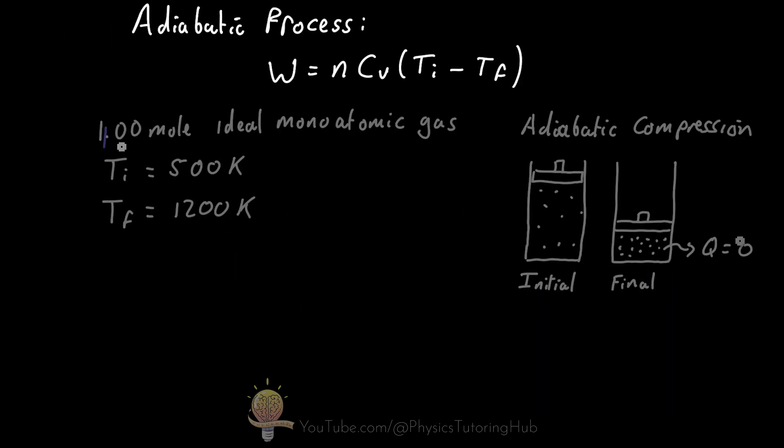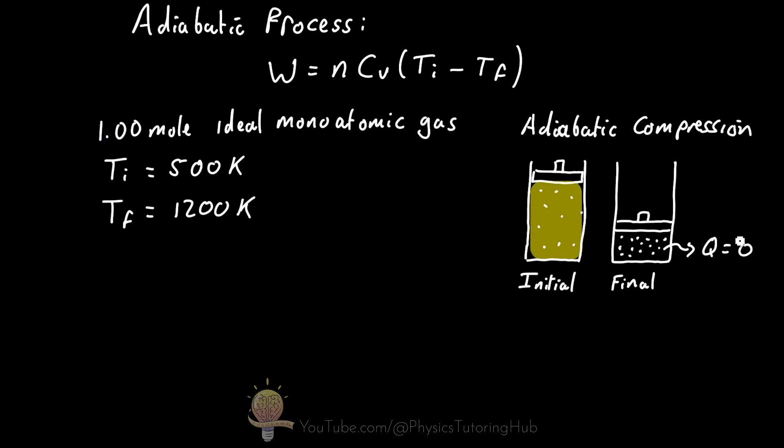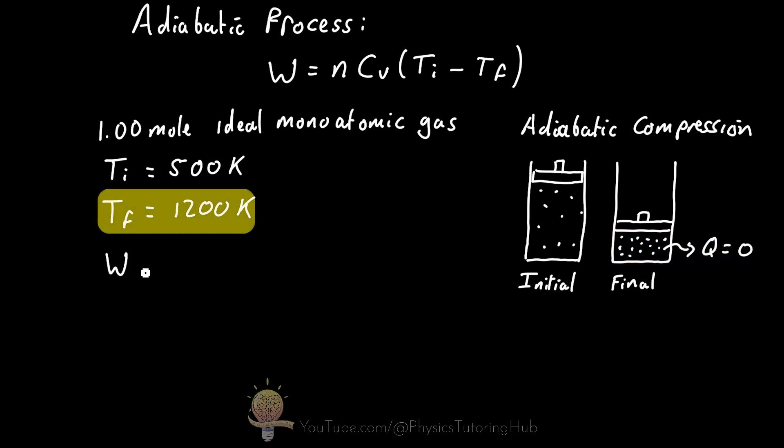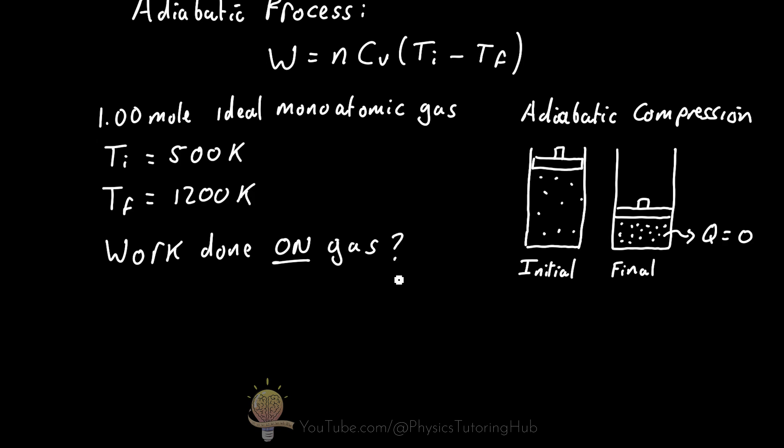Let's say we have one mole of ideal monoatomic gas in a chamber at an initial temperature of 500 Kelvin. After an adiabatic compression the temperature rises to 1200 Kelvin. What is the work done on the gas during this rapid compression?